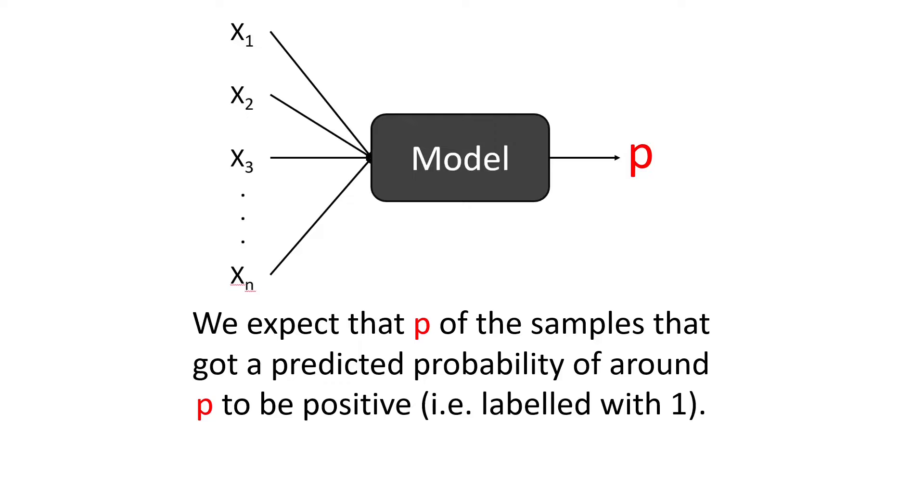Because if the model is well calibrated, we would expect that P of the samples that got a predicted probability of around P to be positive. And this is an important measurement of any statistical model because it shows you how well its predictions align with the true distribution of the data.